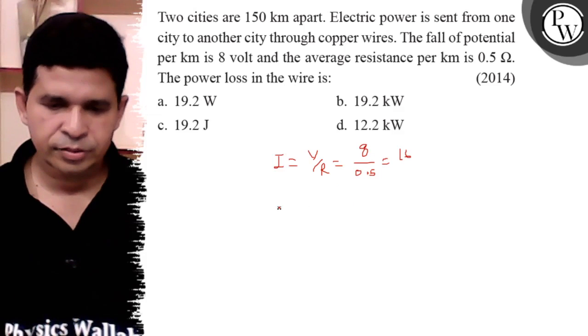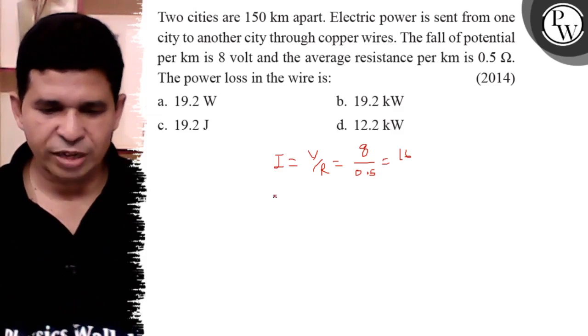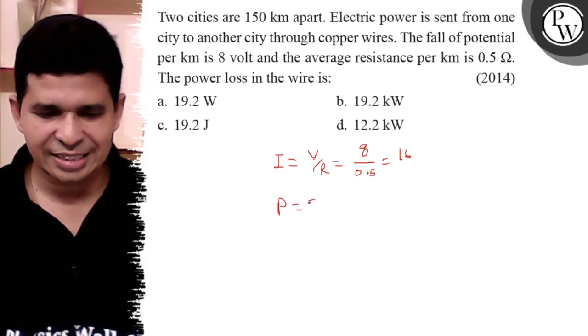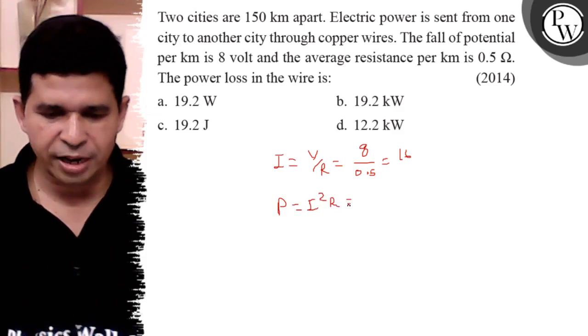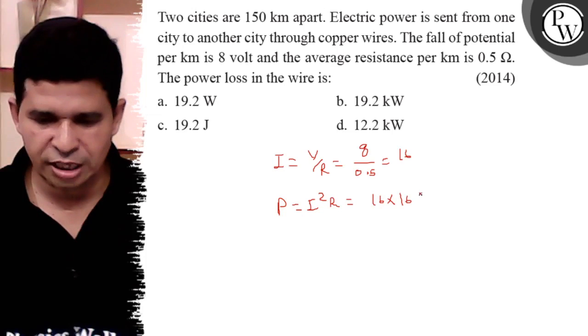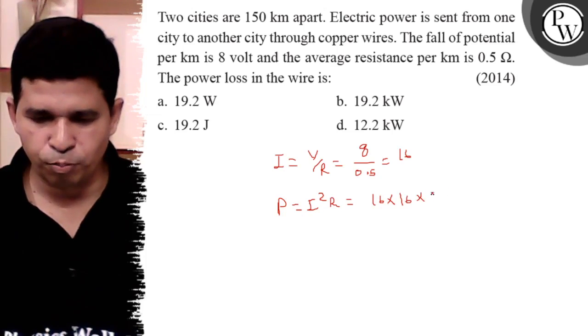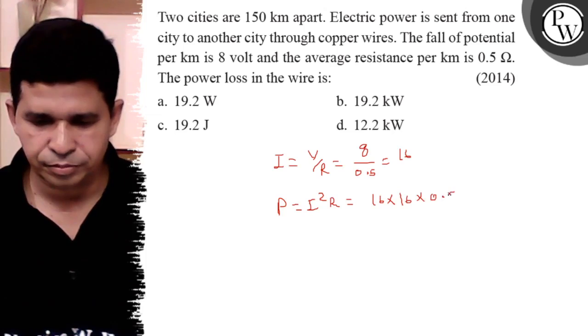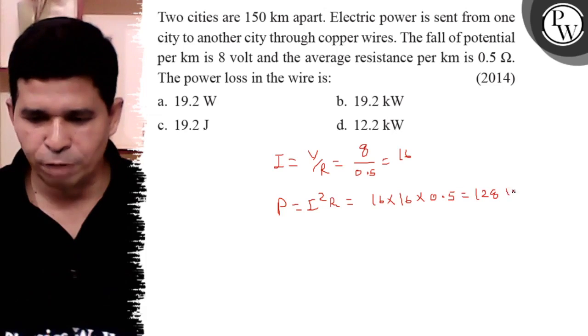So what is the power loss? It is I square R per kilometer, so it is 16 into 16 into 0.5, so it is 128 watt per kilometer.